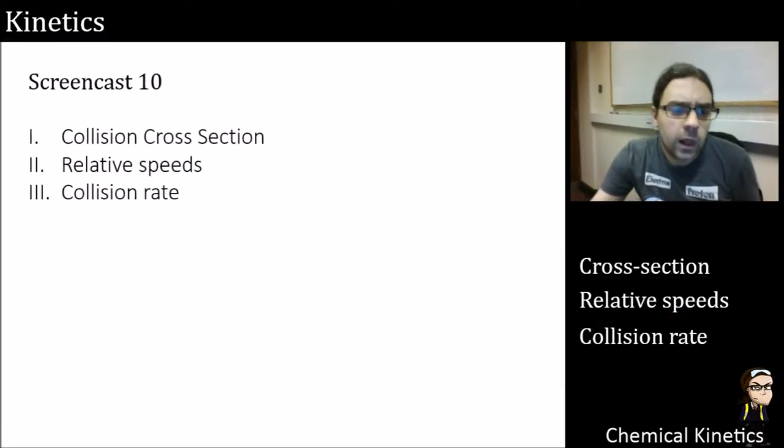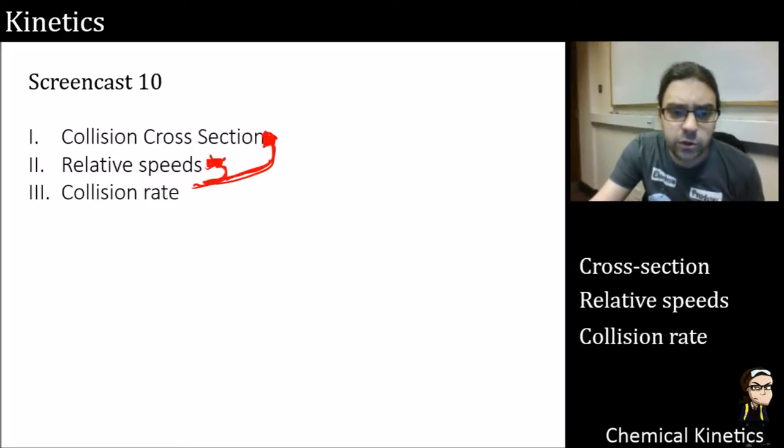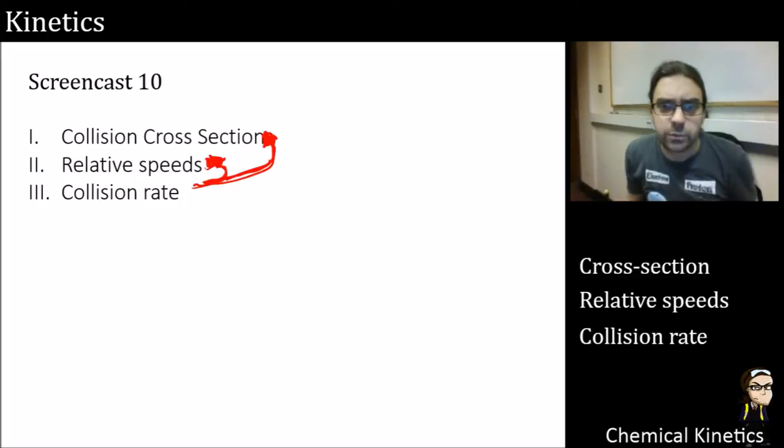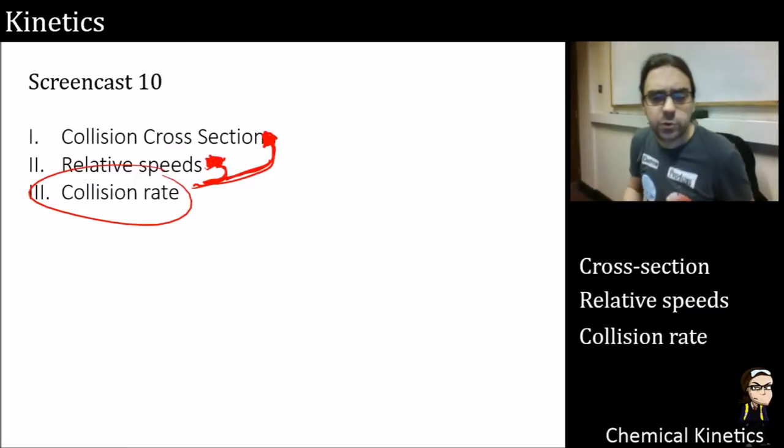We are building on things, so once we define collision cross-section and relative speeds, the collision rate comes from putting these two things together. Obviously the size of a molecule will influence the number of collisions, and the speed that the molecule is moving will influence the number of collisions. We get that from the previous two, so keep that in mind whilst we're going through this.